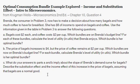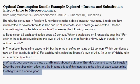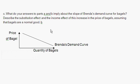Moving on to Part C: what do your answers in Part A and B imply about the slope of Brenda's demand curve for bagels? As the price of bagels goes up, the demand for bagels goes down, which we learned in Part B. This implies that Brenda's demand curve for bagels is downward sloping — at high prices you have low quantity demanded, and at a low price you have high quantity demanded of bagels.